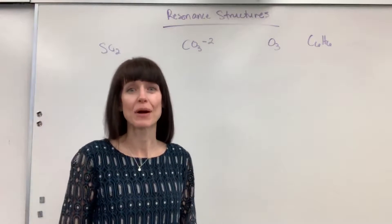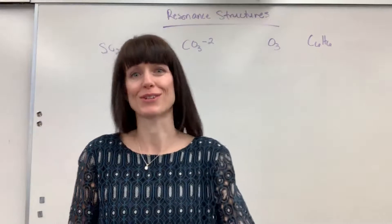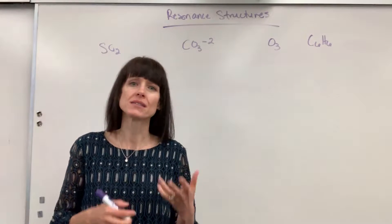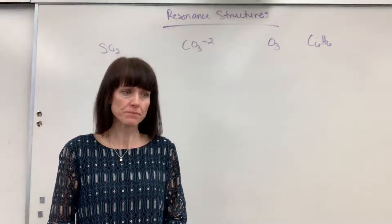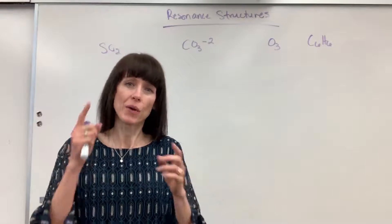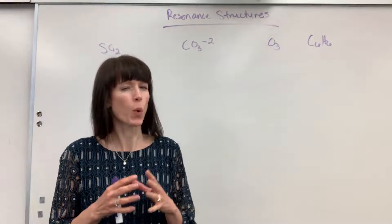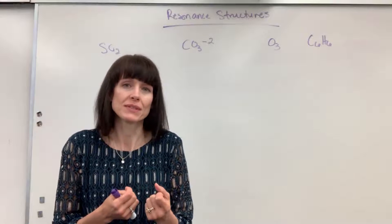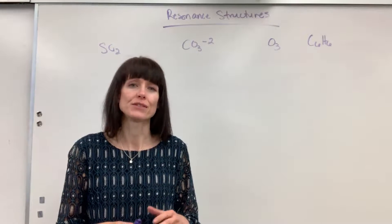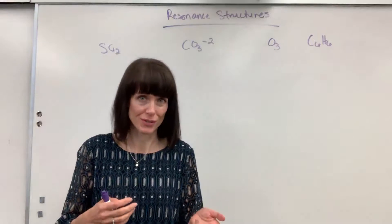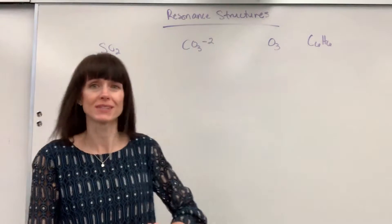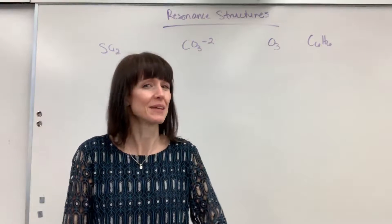We're going to talk about resonance structures now — how to do Lewis dot structures for resonance structures. Here's the deal with resonance structures: a molecule in nature has cases where one Lewis dot structure doesn't quite accurately represent how that molecule exists in nature, so we have to draw multiple structures of it. I have four common examples here that I think will help you.